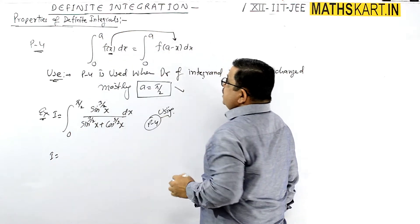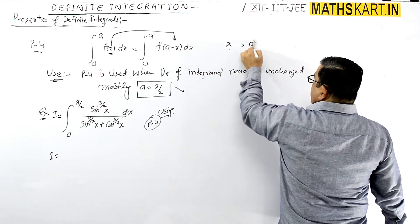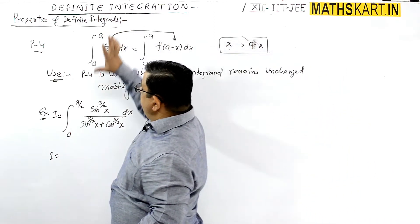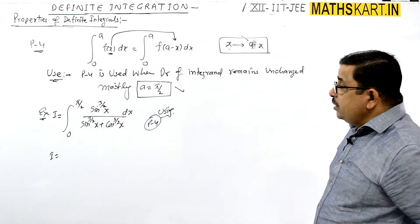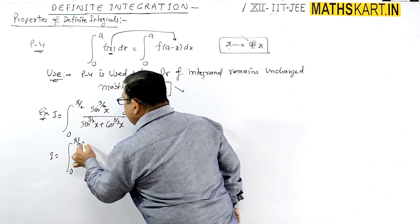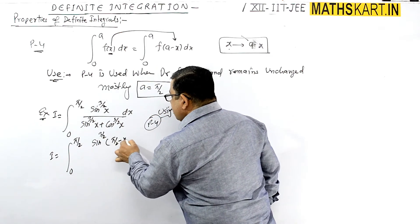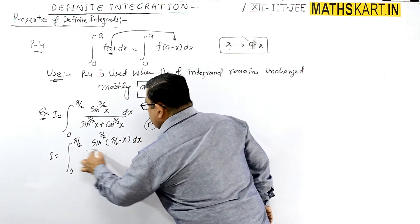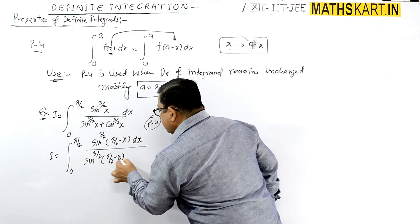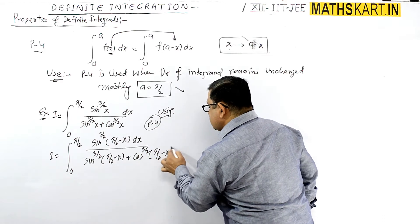By using Property 4, this becomes the integral from 0 to π/2 of sin^(3/2)(π/2 - x) divided by [sin^(3/2)(π/2 - x) + cos^(3/2)(π/2 - x)] dx. Since sin(π/2 - x) = cos x and cos(π/2 - x) = sin x, we get cos^(3/2)(x) in the numerator.